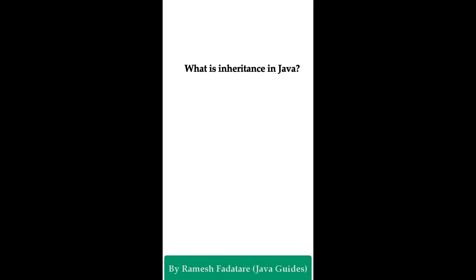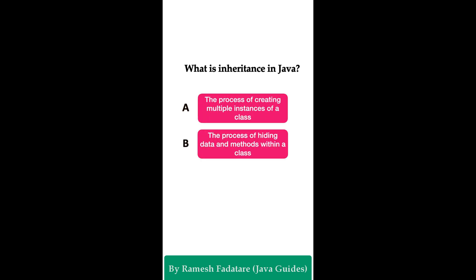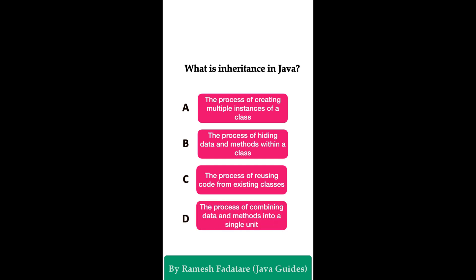Welcome to Java Quiz Series. Here is one more question: What is inheritance in Java? Option A: the process of creating multiple instances of a class. Option B: the process of hiding data and methods within a class. Option C: the process of reusing code from existing classes. Option D: the process of combining data and methods into a single unit. You have five seconds to answer.